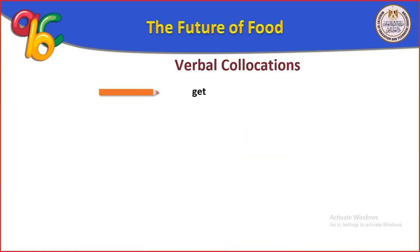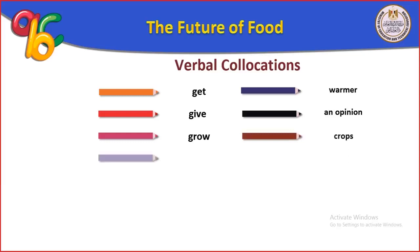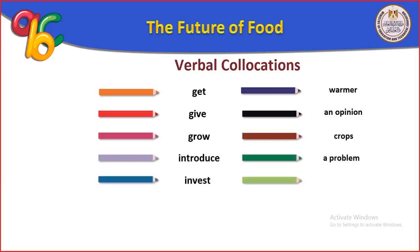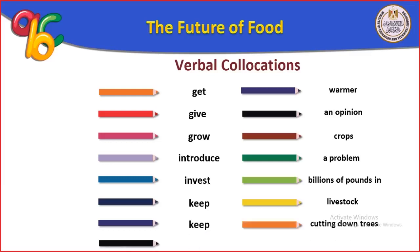Continuing verbal collocations: get warmer (أكثر دفئاً). Give an opinion (يعطي رأيه). Grow crops (يزرع المحاصيل). Introduce a problem (يؤدي مشكلة). Invest billions of pounds in (يستثمر بلايين الجنيهات فيه). Keep livestock (يربي الماشية). Keep cutting down trees (يحافظ على قطع الأشجار).